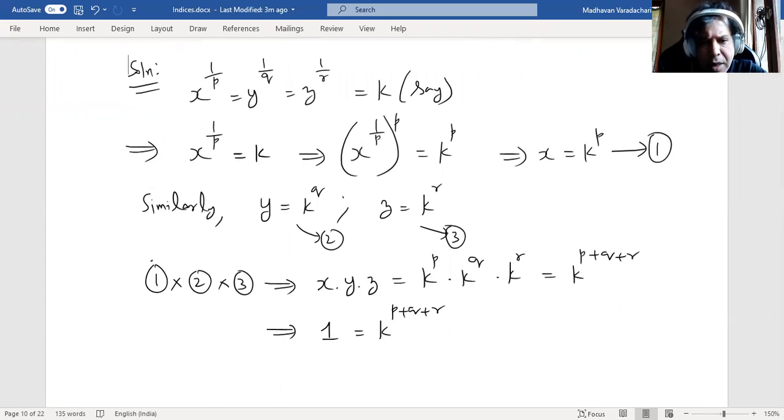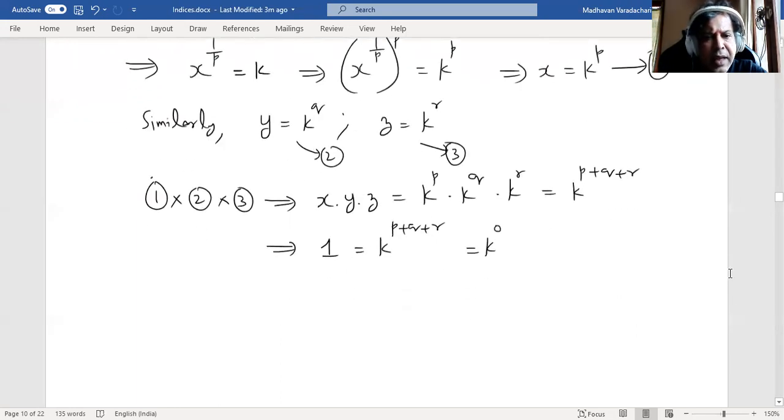This 1 can be written as k power 0 because anything to the power of 0 is 1. Any real number to the power of 0 is 1. So I can write this 1 as k power 0. Now, these two bases are k and k. That means I can equate the indices. So that implies p plus q plus r equal to 0.